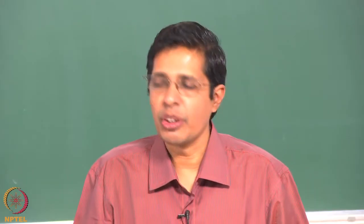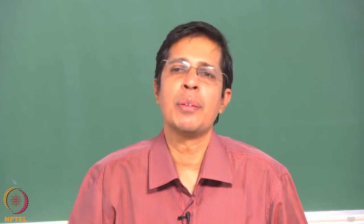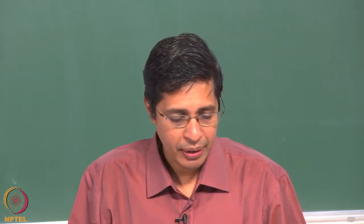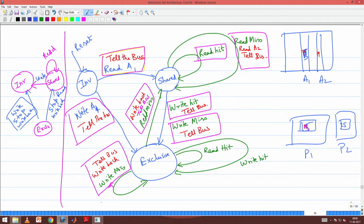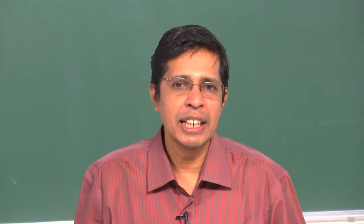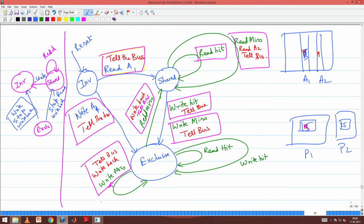Last class we saw this cache - the multiprocessor cache - where each cache line has a state. In our earlier uniprocessor cache we had only one bit for the state, but now we have two bits because we need to maintain three states: invalid, shared, and exclusive. The state of a cache line changes because of its own processor's actions, shown by the larger state machine, or because of bus activity, shown by the smaller state machine.